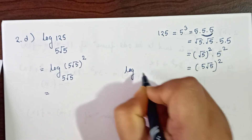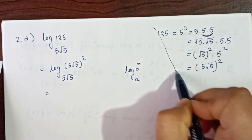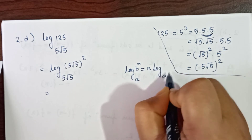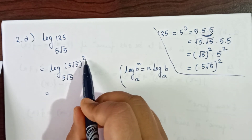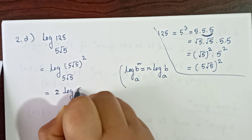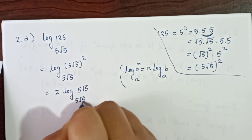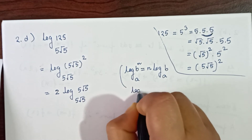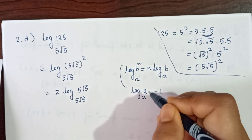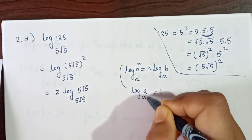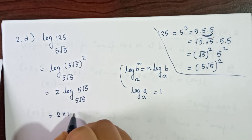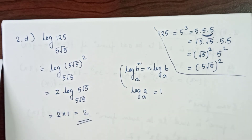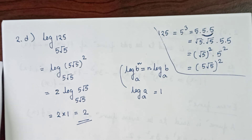Using the formula log_a(bⁿ) = n·log_a(b), the power is 2, so we get 2·log_(5√5)(5√5). Using the identity log_a(a) = 1, this becomes 2 × 1 = 2. So the logarithm value of 125 to the base 5√5 is equal to 2.